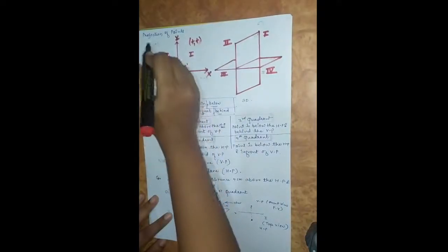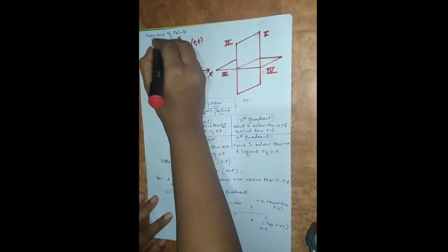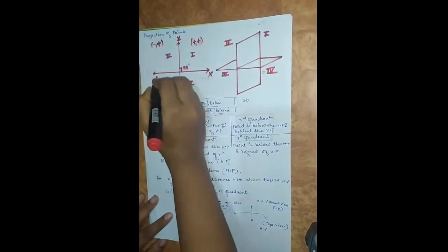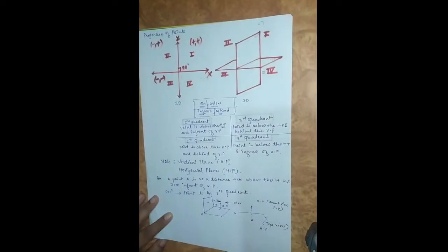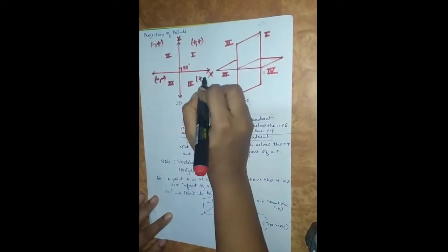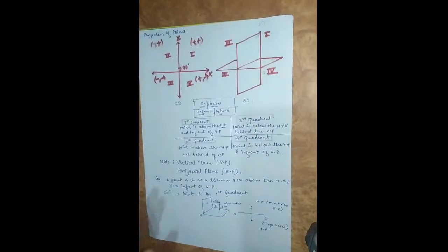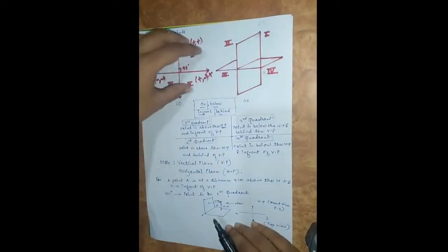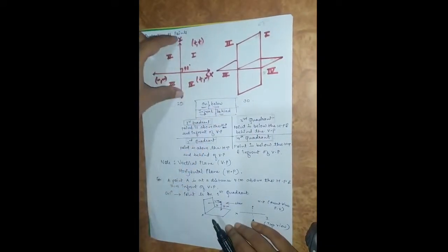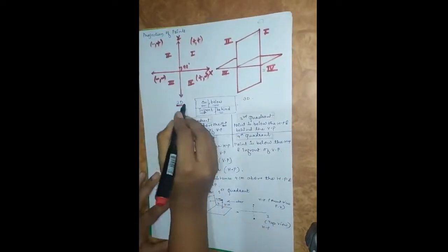In the second quadrant, X is negative and Y is positive. In the third quadrant, both X and Y are negative. In the fourth quadrant, X is positive and Y is negative. This representation of the X and Y axes is in 2D form.